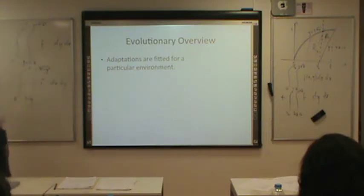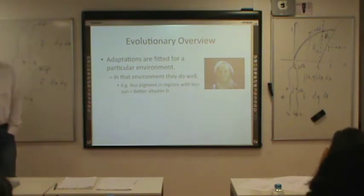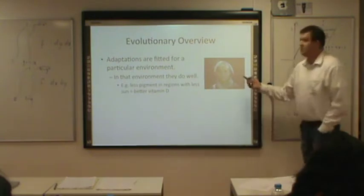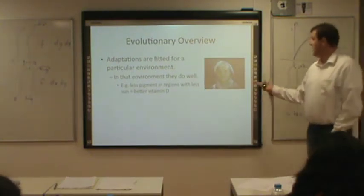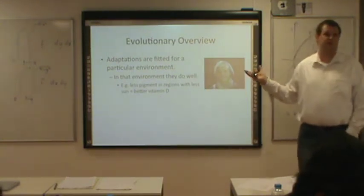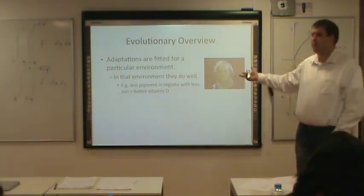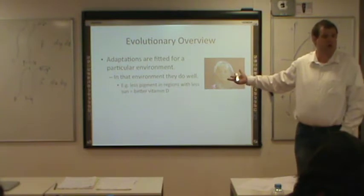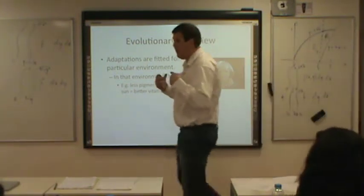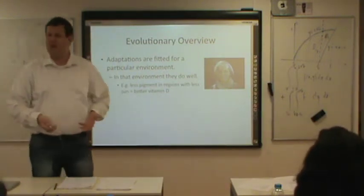Adaptations are fitted for a particular environment, and in that environment those adaptations do really well. So here's this kid who can't see very well and doesn't have a whole lot of pigment in his skin. This is a really good adaptation if you live up north where you have less exposure to the sun, because your skin needs to absorb sunlight to make vitamin D.